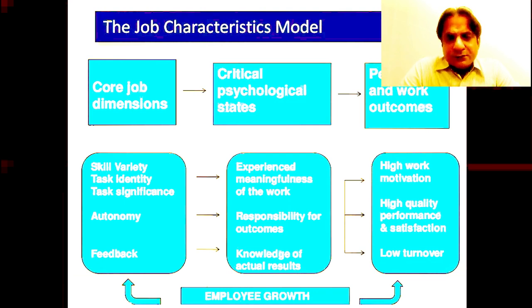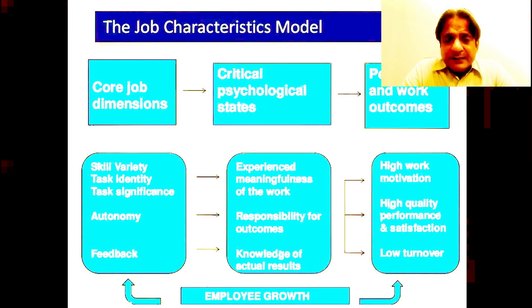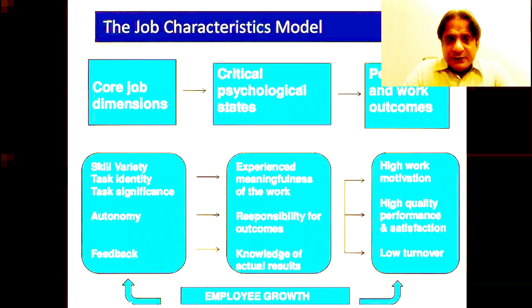We can expand the job characteristics model through a graph. The core job dimensions — skill variety, task identity, task significance, autonomy, and feedback — have a critical impact on employee psychology. When you give employees a job with skill variety and they feel task identity and task significance, they realize their experiences and contributions are meaningful to their work and that they are positively contributing within the organization.